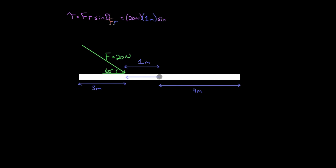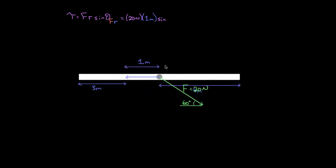Then we need sine of the angle between the force vector and the R vector. Force goes down and right; R goes to the left. To find the true angle, imagine moving F so they're tail to tail — F points down and right, R goes to the left. We can make a right triangle: if that angle is 60 degrees and this is 90, then the remaining angle is 30 degrees. Since 90 plus 30 is 120, the actual angle between the force vector and the R vector is 120 degrees.